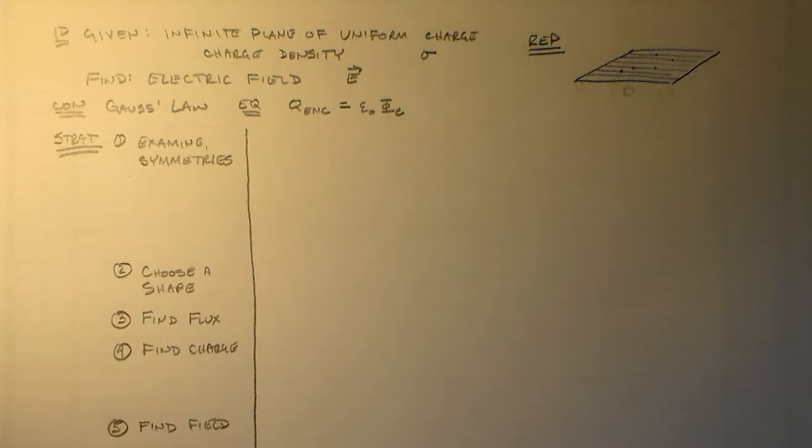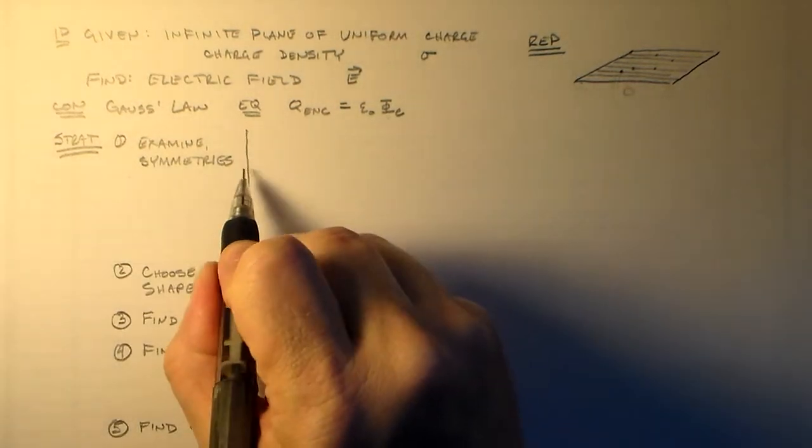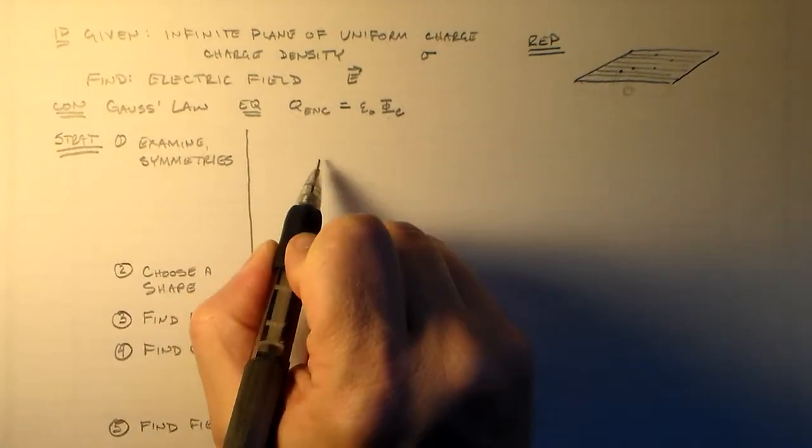So it's pretty direct. The only complicated part is analyzing the symmetries. I shouldn't say complicated. That's the part where you think. So that's one of the reasons why we really like Gauss's law. We like to teach Gauss's law in Physics 3, in E and M. We really like to talk about Gauss's law because it's really where you start thinking about what's going on in the problem.